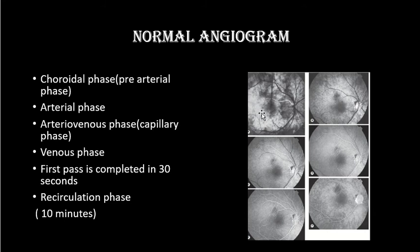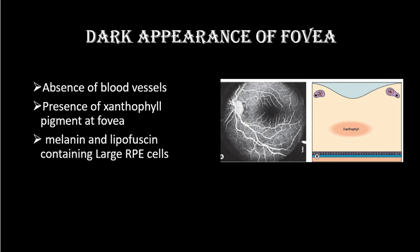In this normal angiogram we can see choroidal fluorescence, filling of the arteries, early filling of the veins, and then all arteries and veins filled. In the late phase there is a decrease in choroidal fluorescence and in dye fluorescence in the veins. However, we see late staining of the disc, which is a characteristic feature of the normal angiogram.